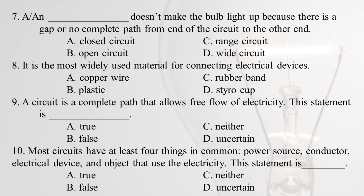(7) A blank doesn't make the bulb light up because there is a gap or no complete path from one end of the circuit to the other. A) closed circuit, B) open circuit, C) range circuit, D) wide circuit. (8) It is the most widely used material for connecting electrical devices. A) copper wire, B) plastic, C) rubber band, D) styro cup. (9) A circuit is a complete path that allows free flow of electricity — this statement is blank. A) true, B) false, C) neither, D) uncertain. (10) Most circuits have at least four things in common: power source, conductor, electrical device, and object that uses electricity — this statement is blank. A) true, B) false, C) neither, D) uncertain.